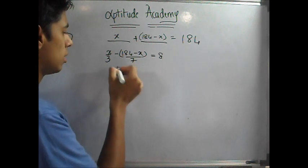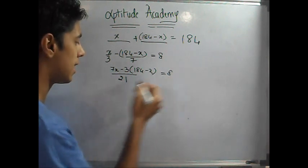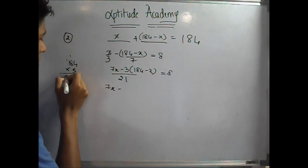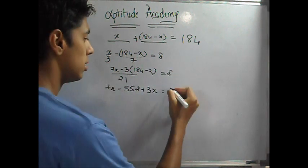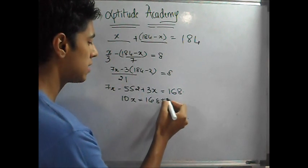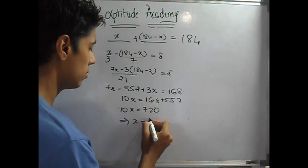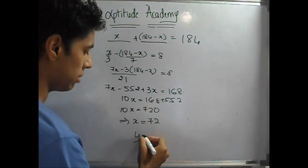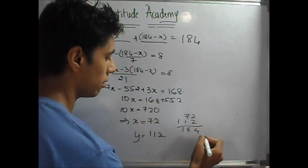Take LCM of 7 and 3, which is 21. This will be 7X minus 3 into (184 minus X) is equal to 8 times 21. So 7X minus 3 into 184, that is 552, plus 3X is equal to 21 into 8, that is 168. 7X plus 3X is 10X. Take 552 on the other side, so it is 168 plus 552, that will be 720. So 10X is equal to 720, which implies X is equal to 72. This is your first number. Your second number is 184 minus 72, so your second number is 112. 72 plus 112 is 184, so this is your answer.